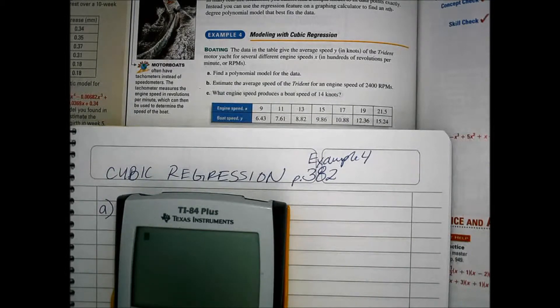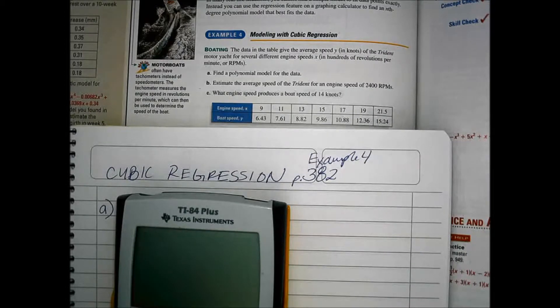Part A: find the polynomial that models the data. Part B: estimate the average speed for the Trident for an engine speed of 2400 RPMs. And Part C: what engine speed produces a boat speed of 14 knots.